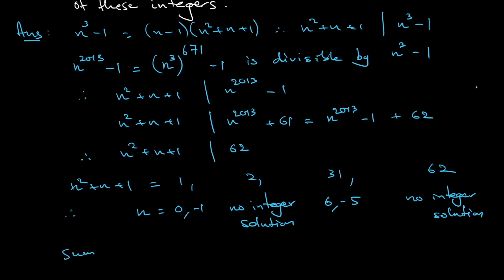The question asks for the sum of the squares, alright? So, the sum of the squares of these numbers is: 0² is still 0, (-1)² is 1, 6² is 36, (-5)² is 25. Add these numbers together, you will get 62, okay? So, the answer would be 62.